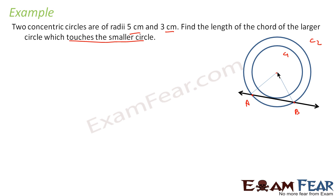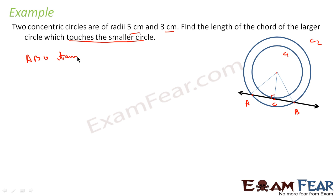From the center, we draw lines to the chord. We know the length of these lines: one is the radius of circle C1 and the other is the radius of circle C2. We also know that the radius to the point of tangency is perpendicular, because chord AB touches circle C1 at one point, making AB tangent to circle C1.